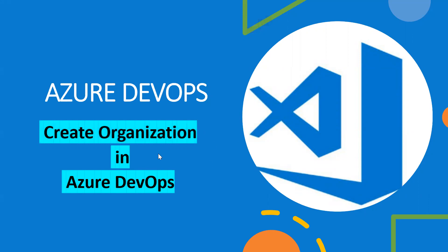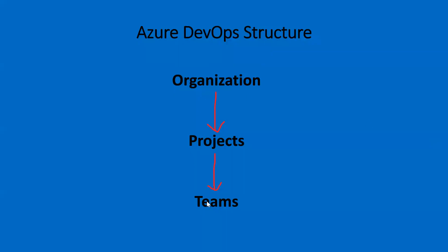Before we go ahead and start creating an organization, let's first understand what is the default structure that Azure DevOps follows. Here I have listed the basic starting aspects. You need to create an organization, and then you will be able to create projects under that organization. And once you have projects, you can create teams. You cannot create a project until and unless you create an organization.